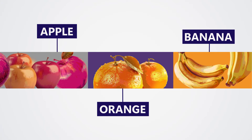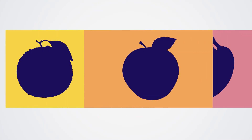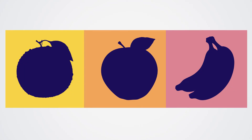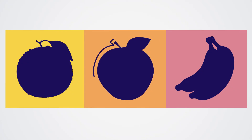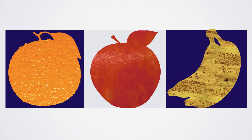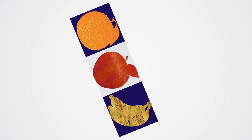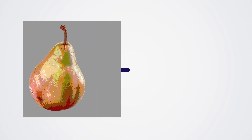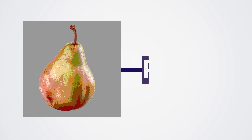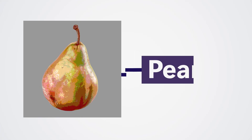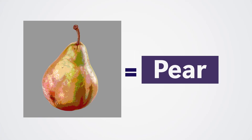Once the computer has seen enough, it starts to recognize the features that make each fruit unique, like the shape, color, and texture. Now when we show the computer a new picture that it hasn't seen before, it can make a prediction about what kind of fruit it is based on what it's learned.